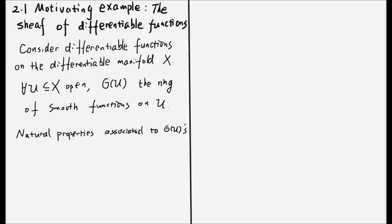We know that there are some natural properties associated to those rings of functions. First, restriction maps. If open subset U is contained in the open subset V, there should be a restriction map from the ring of smooth functions on V to O(U).